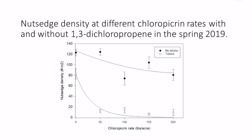The next graph shows the same setup but for spring 2019. Looking at the black dots — no Telone — you consistently have much higher nutsedge density without Telone. But with Telone, shown as clear dots, you see not only fewer nutsedge emerging but a much more rapid decrease in density. At around 150 pounds of chloropicrin with 15 gallons per acre of Telone, we have almost 100% nutsedge control. The key message is that combining both products gives you much better nutsedge control than using either product alone.